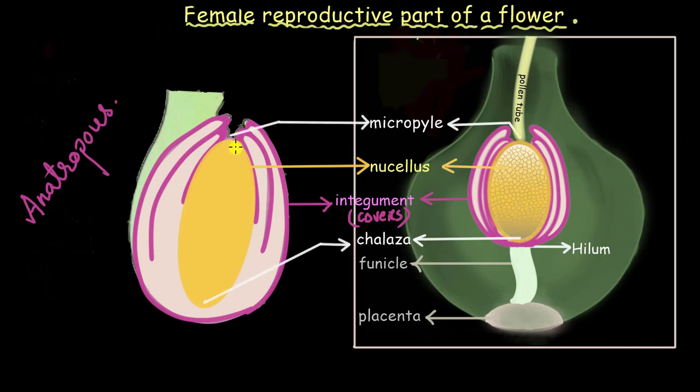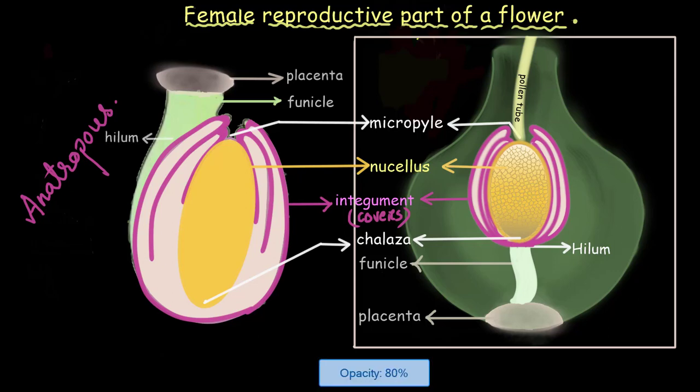Now as this ovule is placed upside down, this funicle and the placenta will be somewhere on the top. If we consider this to be the placenta, the portion that is attaching the placenta with the integuments will be called the funicle. So this is the funicle. Now can you guess where will be the hilum? The hilum is the area that is connecting the funicle and the integument. So it will be somewhere here. And this is it. These are all the different parts of a typical ovule. These are all the different parts that you need to know.